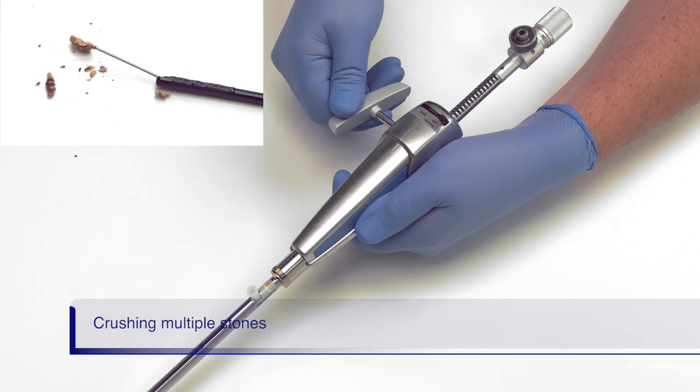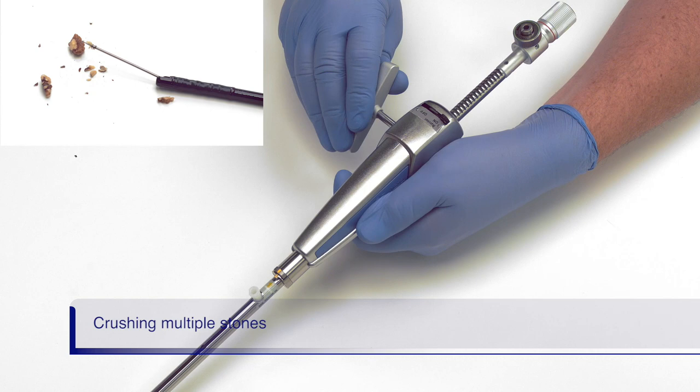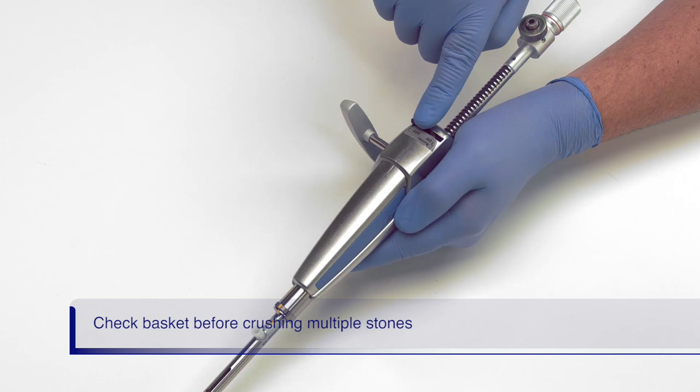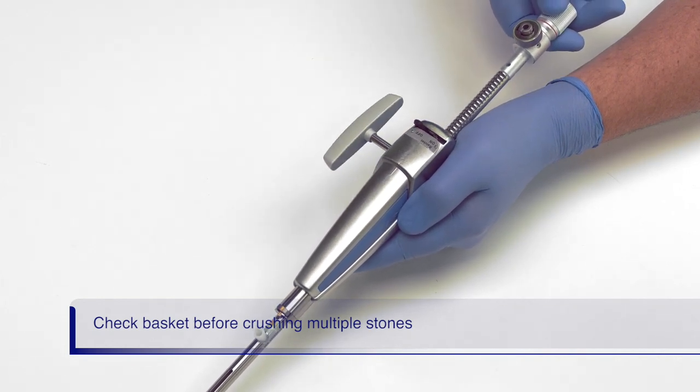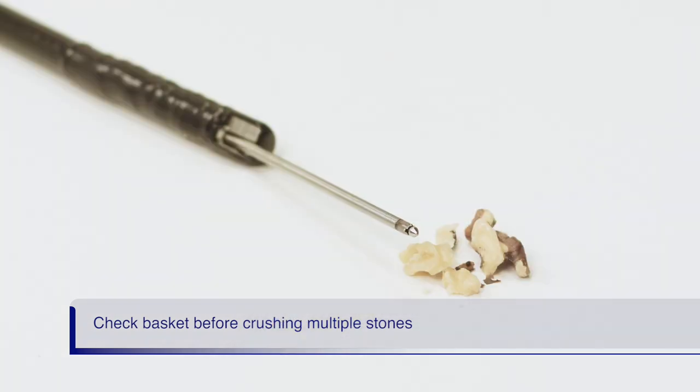LithoCrush V can be used to crush multiple stones. However, you will need to crush each stone one at a time. Turn the ratchet off and check that the basket can reopen smoothly. Apply gentle pressure to the back of the handle to reopen the basket. Smoothly open and close the basket before crushing additional stones. If the basket does not smoothly open and close, then remove it from the patient and use a new basket to ensure no trauma is done to the duct.